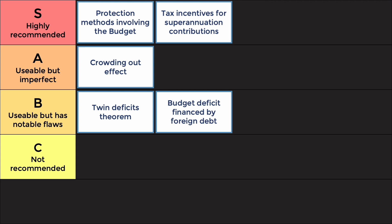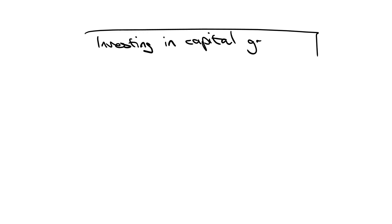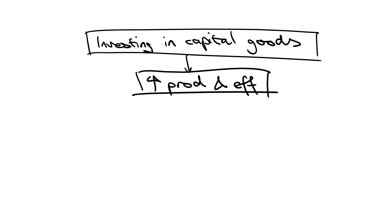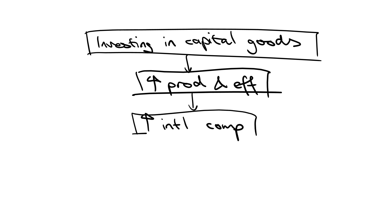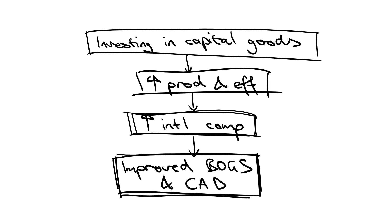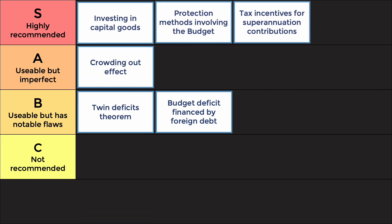Another S-tier point: fiscal policy can increase international competitiveness when used to invest in capital goods such as transport or telecommunications infrastructure, or training and education. These capital goods relieve capacity constraints and increase productivity and efficiency in the economy, leading to greater international competitiveness, growth in export industries, and an improved balance of goods and services and current account deficit in the long run. This is simple to explain and details of government spending on infrastructure and education are easy to find.